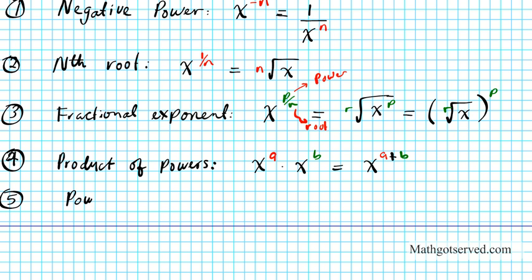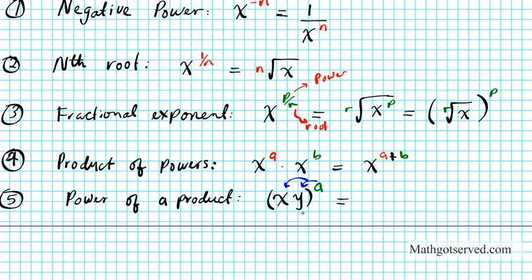Property five: what if you have the power of a product? So let's say you have x times y raised to power a. The rule is that you can simply distribute this power to all the terms inside the parenthesis. What you end up with is x to the a times y to the a. Imagine there was a 1 exponent on x and y, and you just multiply a times 1 and a times 1 to get x to the a, y to the a.